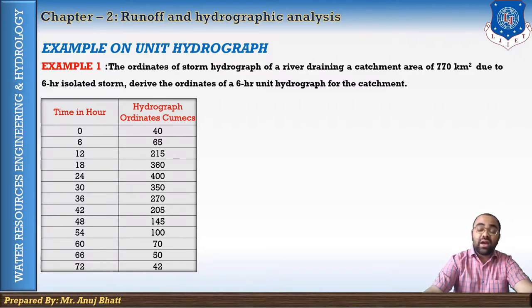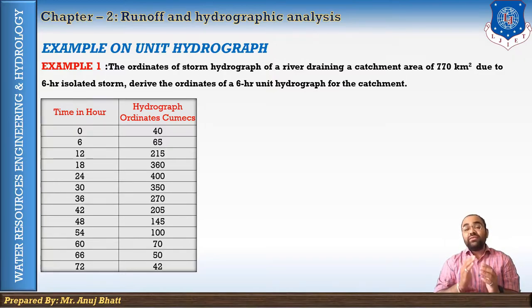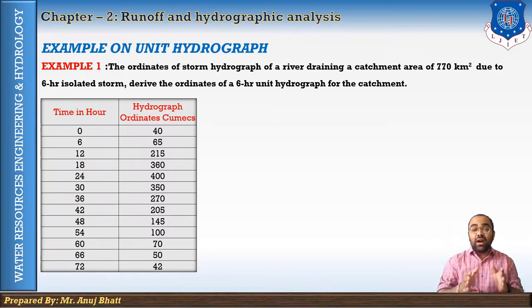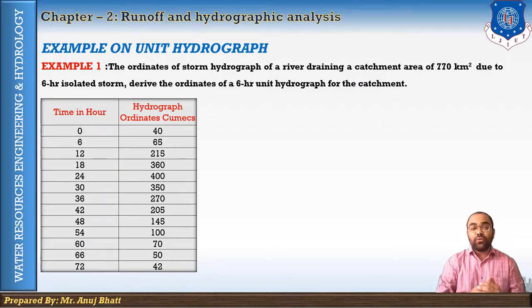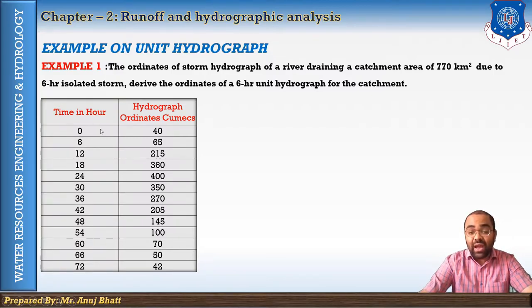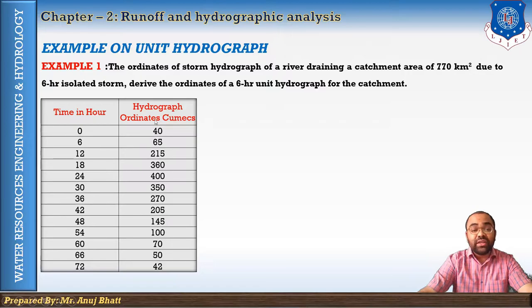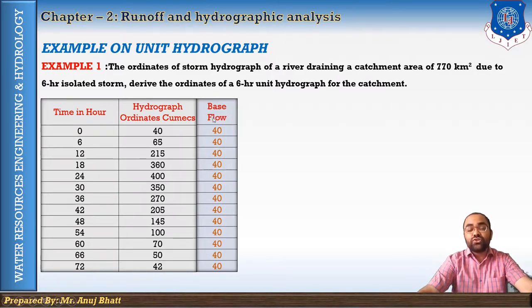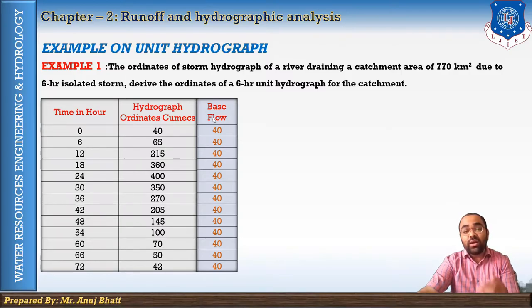We also have the area value. Now, to derive the unit hydrograph, recalling unit hydrograph theory, there is a limitation that we consider a particular base flow throughout the computation. Our next target is to select the base flow. At the initial time when rainfall occurs — at time zero — the value of the flood hydrograph ordinate is 40 cumecs, so we will consider the base flow as 40 cumecs throughout the calculation.